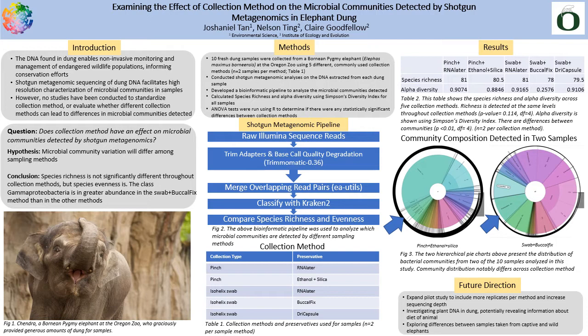Finally, I will explore differences between samples taken from wild and captive elephants. In conclusion, to readdress my question of whether collection method has an effect on microbial communities detected by shotgun metagenomics: species richness is not significantly different across collection methods, but species evenness is. The class gamma-proteobacteria is in greater abundance in the swab-vehicle fix method than in the other methods. Finally, I would like to thank my principal investigator, Dr. Nelson Ting, and my mentor, Claire Goodfellow, for guiding me through this process and giving me the opportunity.